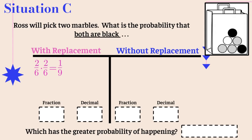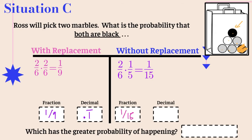Now without replacement: we start with two out of six. But then we remove one of the black marbles, leaving one black marble out of five total. So two out of six times one out of five gives us one fifteenth. Comparing decimals: one ninth is 0.1 repeating, and one fifteenth is 0.06. Since 0.1 is greater than 0.06, this time with replacement is more likely. We removed a favorable outcome, which changed the result.